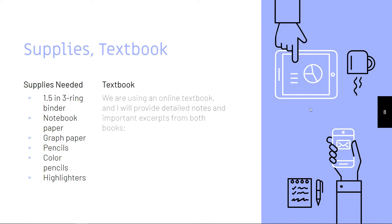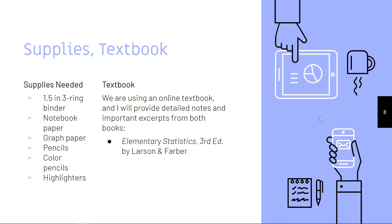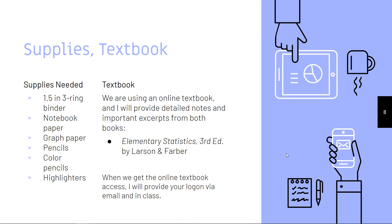For the textbook this year, we're using an online textbook. Sign-on information hasn't been provided just yet, but as soon as it is, I will provide you with detailed login information, notes, and important excerpts from the book. The book is called Elementary Statistics — it's a college-level textbook but written in a very easy-to-read format with great questions and examples. I'll also provide the login to the sub to give to you in class.